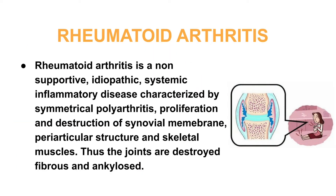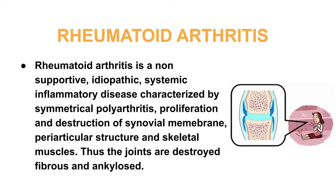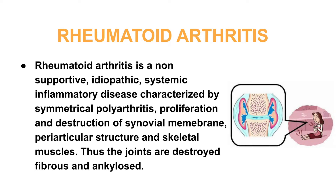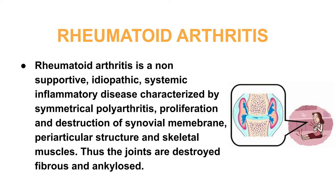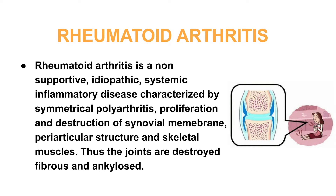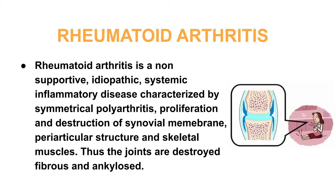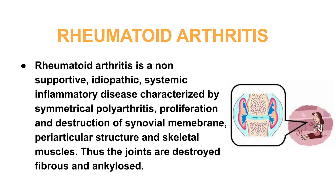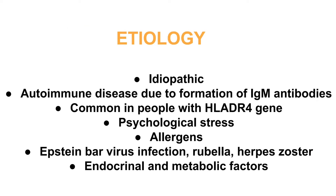Rheumatoid arthritis is a non-suppurative, idiopathic, systemic inflammatory disease characterized by symmetrical polyarthritis, proliferation and destruction of the synovial membrane, peri-articular structures, and skeletal muscles. As a result, the joints are destroyed, fibrous, and ankylosed.